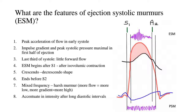Another important point is that the ejection systolic murmur accentuates in intensity after a long diastolic interval — I will explain this later. The overall structure of ESM is crescendo-decrescendo. This is in sharp contrast to a holosystolic or pansystolic murmur, which does not begin after a gap — it begins immediately with S1 and extends right up to the second heart sound, with no crescendo or decrescendo shape.